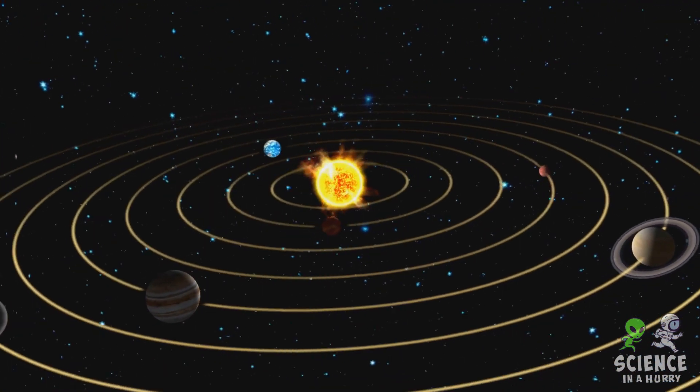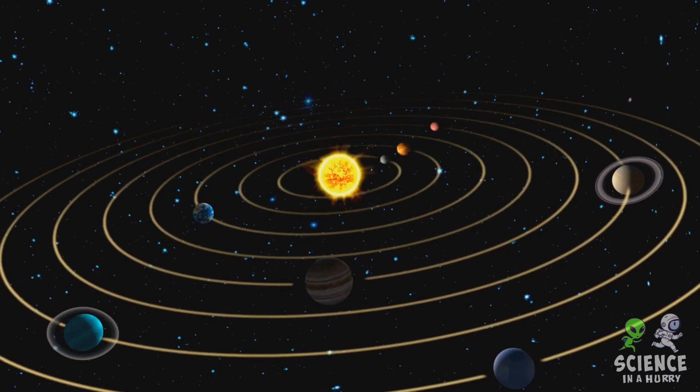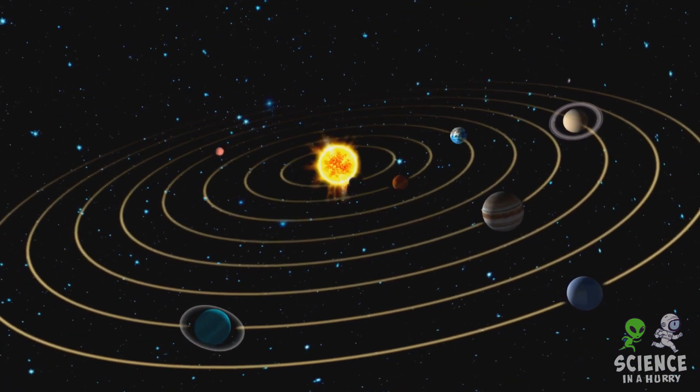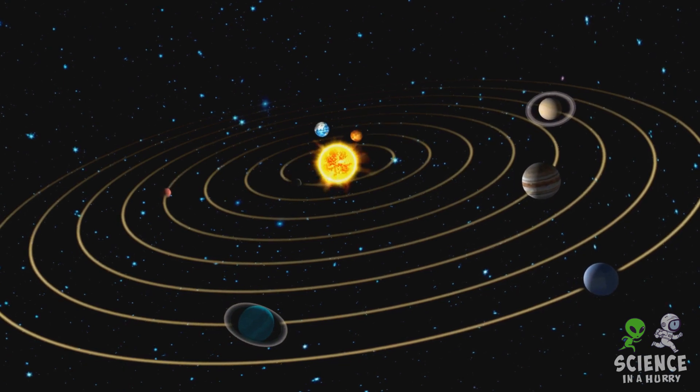Farther out, where it's cooler, gas giants like Jupiter and Saturn take shape. Their massive sizes allow them to capture lighter gases, such as hydrogen and helium.